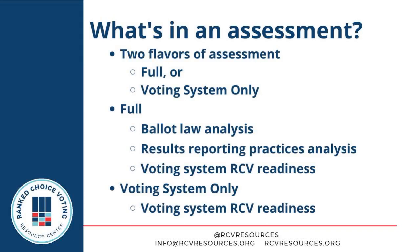We had prioritized some states to do first. The full assessments include states we prioritized, and the voting system only assessments include states where there was relatively less ranked choice voting activity when we started the project. We focus on voting system only as the break here because the voting system assessment is more or less the simplest part of this work to do. Our full assessments include a ballot law analysis — a brief survey of the law regulating ballot design and ballot layout in a state to understand if there are any obstacles for ranked choice voting. Then it includes an analysis of the results reporting practices, laws, and procedures in a state, to understand what processes already exist that may jumpstart ranked choice voting, what may be a barrier, and what processes need to be created in the first place.